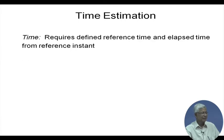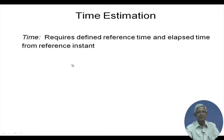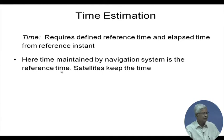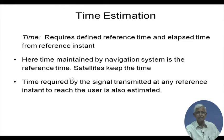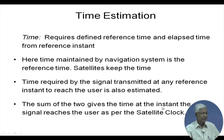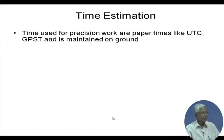Time estimation requires a defined reference time and the elapsed time from the reference instant. The time maintained by the navigation system uses the satellite's reference time. The time required for the signal transmitted at any reference instant to reach the user is also estimated — that is the propagation part. Once these two are added, you get the time instant when the signal reaches the user as per the satellite clock.